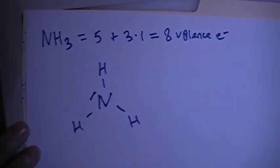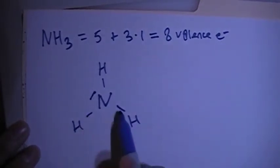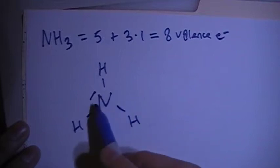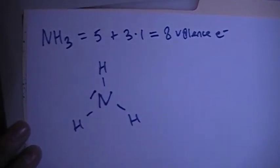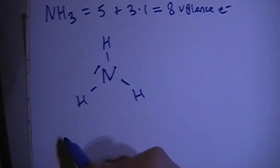So remember, this line is going to signify 2 electrons. So there's 1, 2, 3 single bonds, each to a hydrogen, and 1 non-bonding pair. So that should be our structure, but we can go ahead and do the formal charges to verify that this is correct.